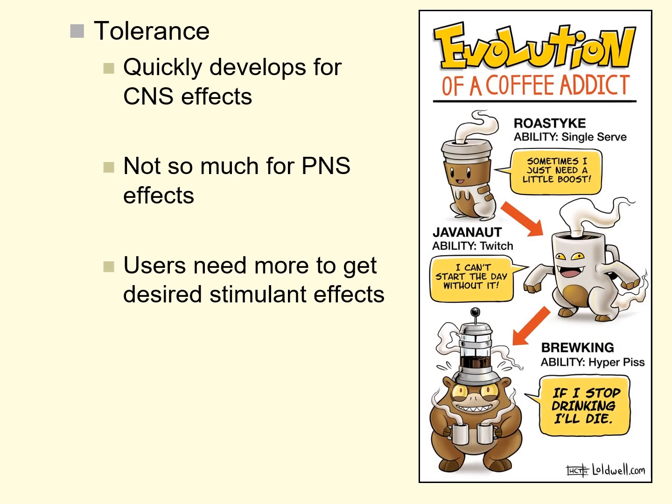Tolerance develops fairly quickly for some of the central nervous system effects, not so quickly for some of the peripheral nervous system effects. This means that people who use caffeine tend to want to use more and more of the drug in order to get the same desired effect. You probably are familiar with this example from your own life — you begin drinking coffee at the beginning of the semester and have a cup every day, but by the end of the semester you're drinking two or three cups a day just to experience that same level of mental boosting you were getting from one cup earlier on.